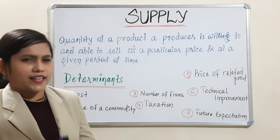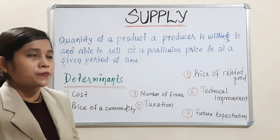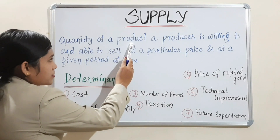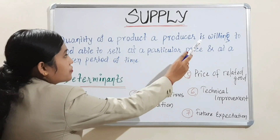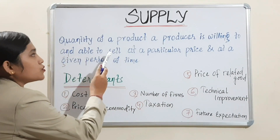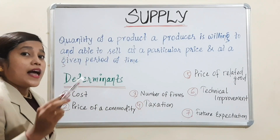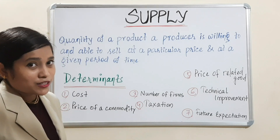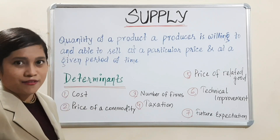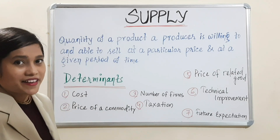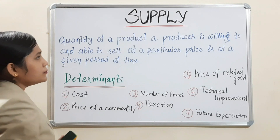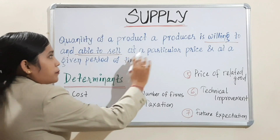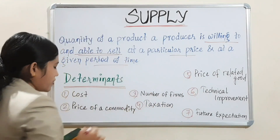What do you mean by supply? Let's start with the definition. The quantity of a product a producer is willing to and able to sell — willing to and able to. Just compare with the definition of demand: able to and willingness to have, that is the effective desire. Same thing here — willing to and able to sell, at a particular price and at a given period of time.